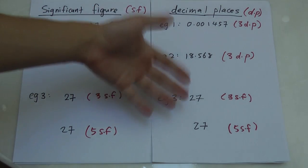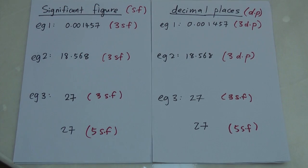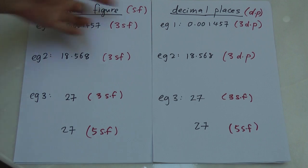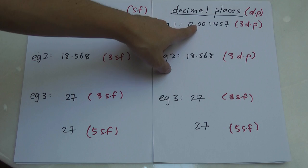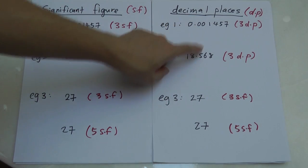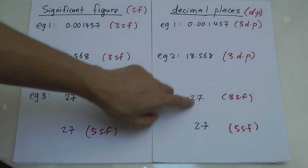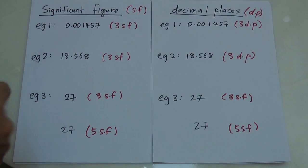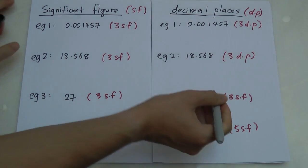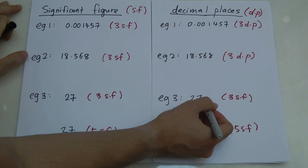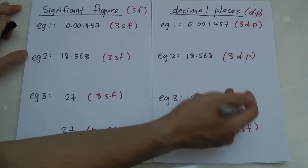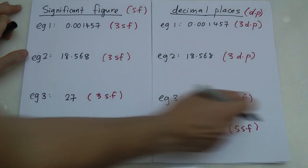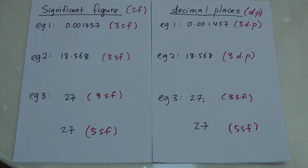The difference between significant figures and decimal place is that decimal place is always calculated based on the decimal point — this small dot here. For the number 27, you don't see any dot, but the dot is just behind the seven, and after it you have zeros going on.